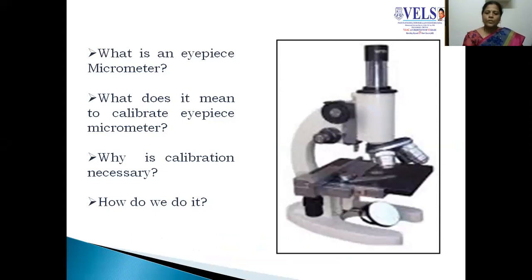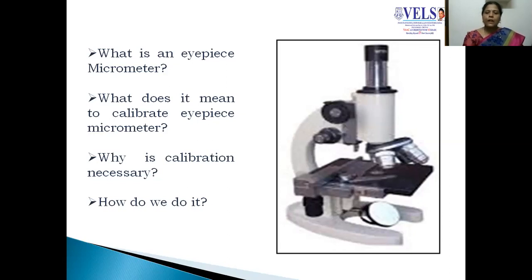If a specimen or object is large in size, we can measure it using a normal or ordinary ruler. If the size of an object or specimen is very small — that is, in micron size — it is impossible to measure using an ordinary ruler. In such a case, we will use a specialized ruler, what we call an IPS micrometer. This IPS micrometer is embedded within the lens.